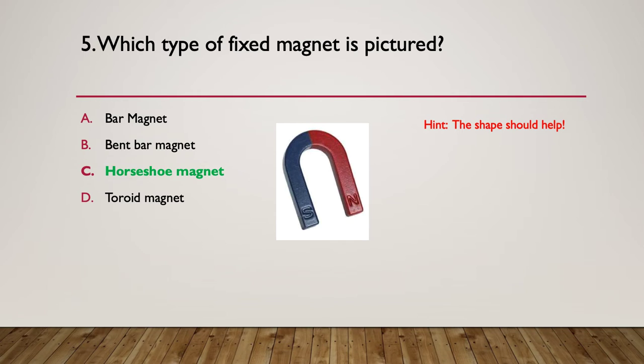Of course, this was a horseshoe magnet. It is a form of bar magnet and it's certainly a bent bar magnet, but we would call it a horseshoe magnet. A toroid magnet is a magnet that is donut shape. It's circular with a hole through the middle. That's a toroid magnet.